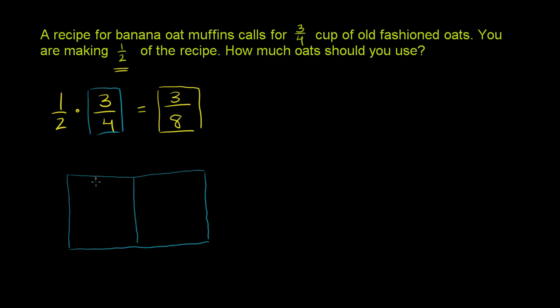So if we put it into fourths, three-fourths would represent 3 of these. So it would represent 1, 2, 3. It would represent that many oats.